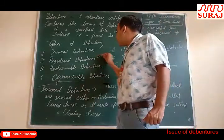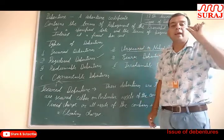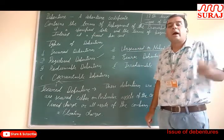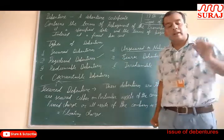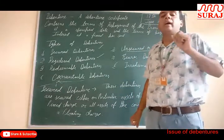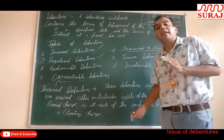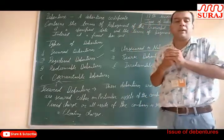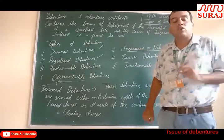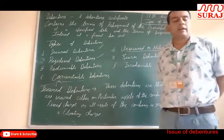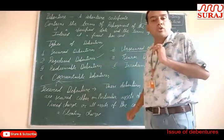Next is registered debenture. Those debentures whose name and address are recorded in the register of the company. The name and address of the debenture holder are recorded in the register of the company. These debentures are not easily transferable. Interest and principal money will be paid only to those whose name and address are written in the register of the company.